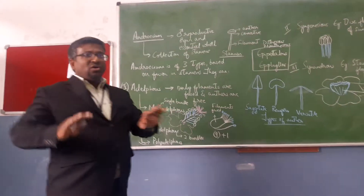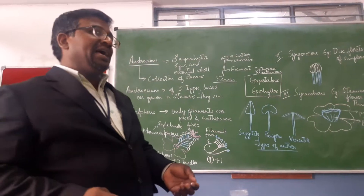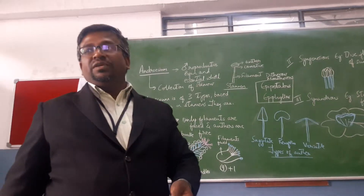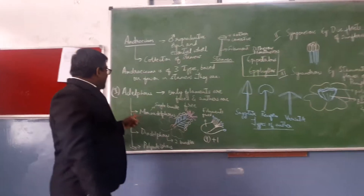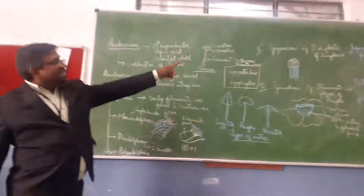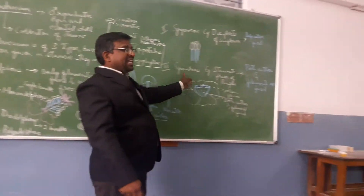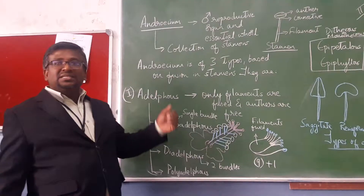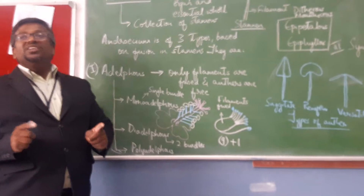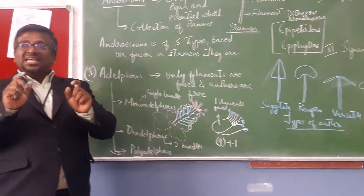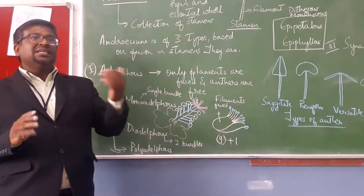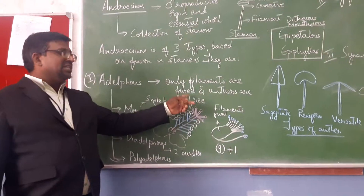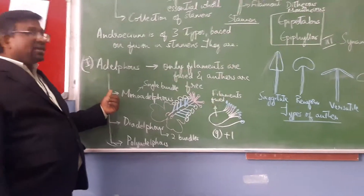Androecium stamens can be classified into three types based on the type of fusion they have. The fusion can be adelphous, syngenesious, or synandrous. In the adelphous condition, only the filaments are fused while the anthers are free.